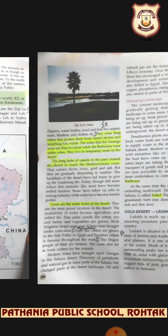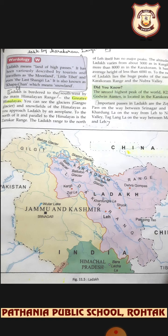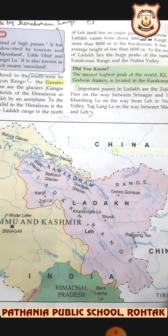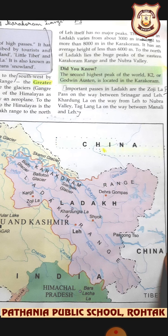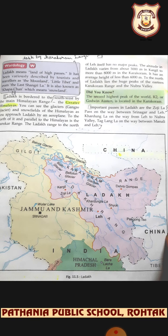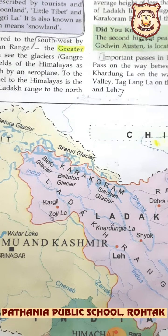The altitude in Ladakh varies from about 3000 meters in Kargil to more than 8000 meters in the Karakoram, with an average height of less than 6000 meters. To the north of Ladakh lie the huge peaks of the eastern Karakoram range and the Nubra Valley.